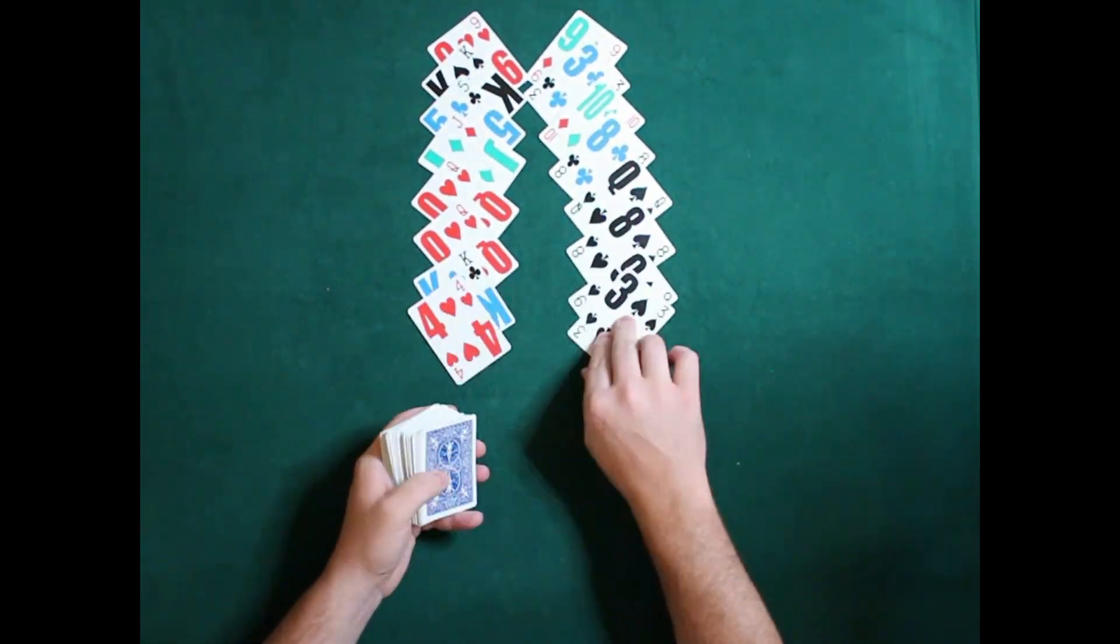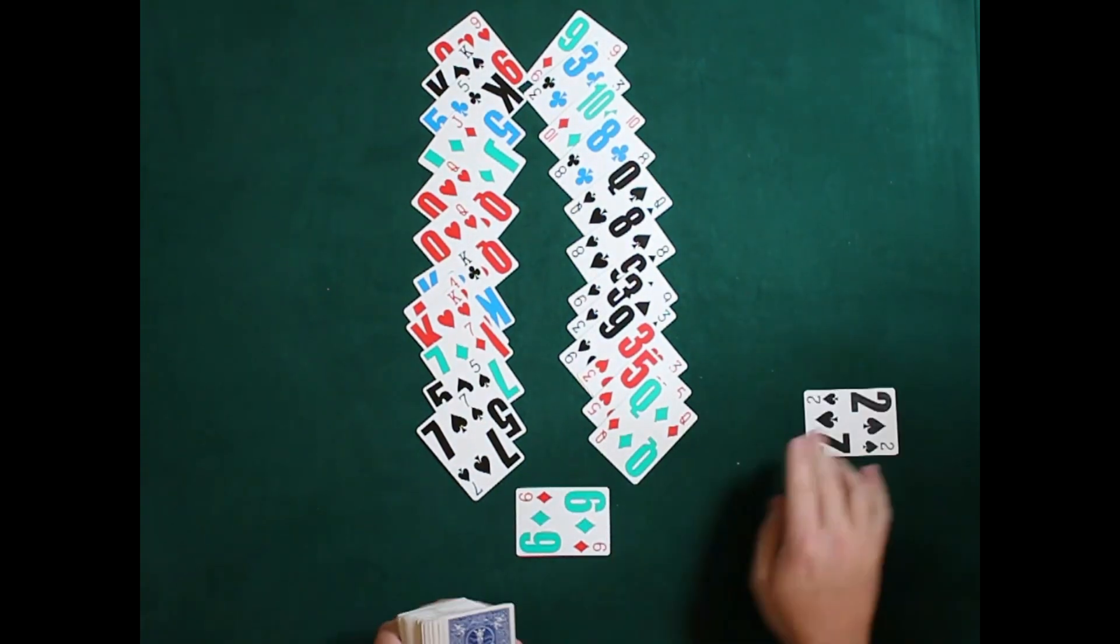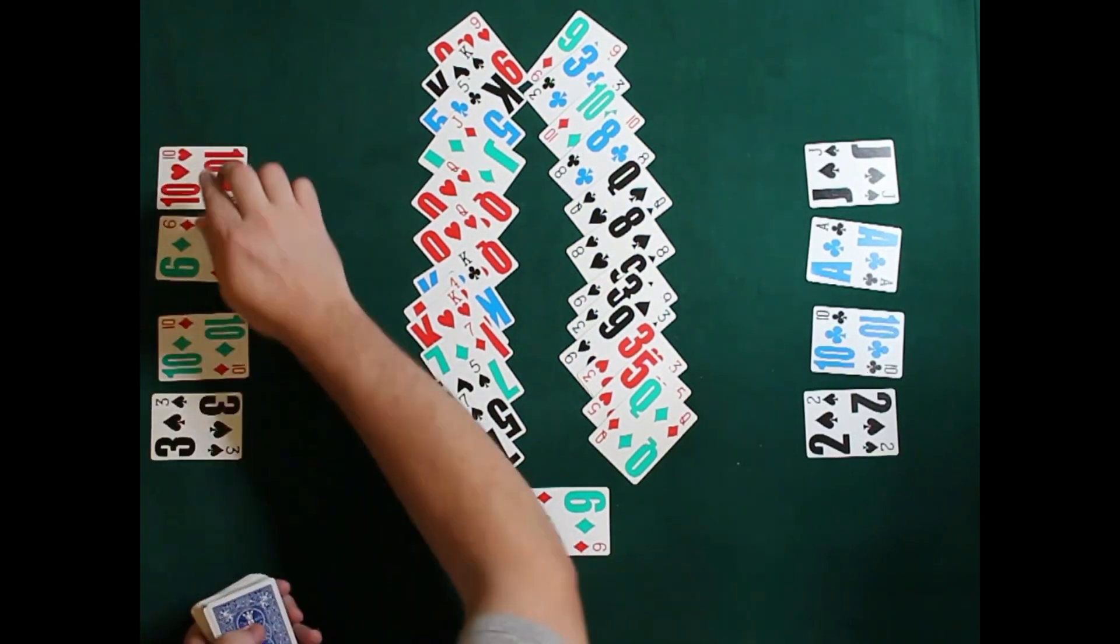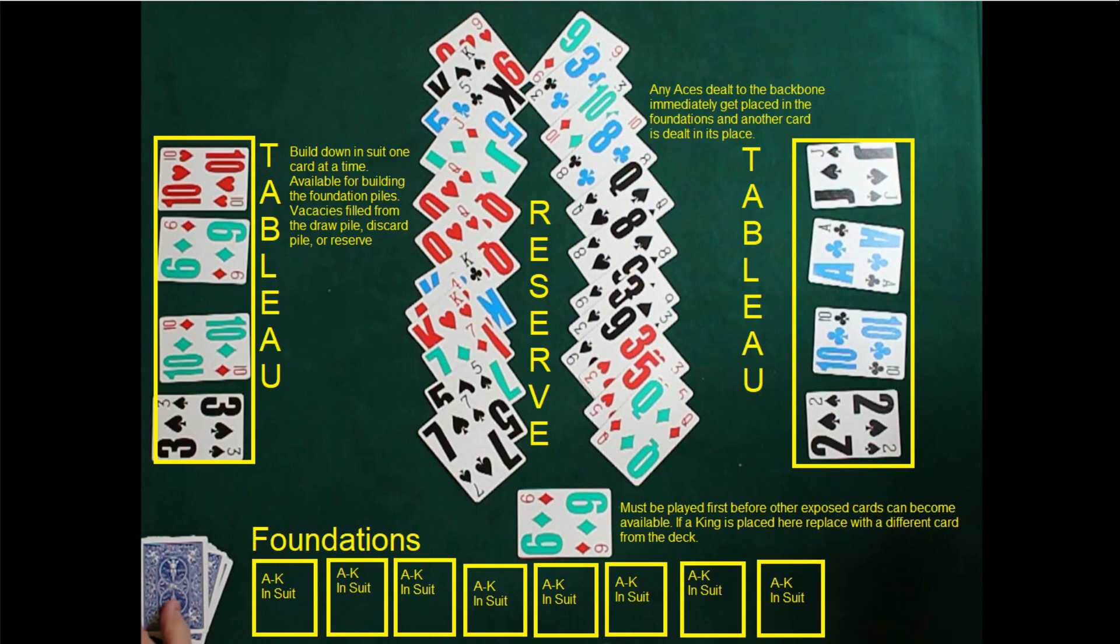Deal 12 cards in a column, overlapping with one card at the end, and then eight cards to the side, four on one side, four on the other. This will serve as the tableau.